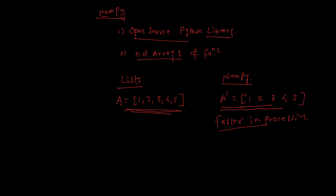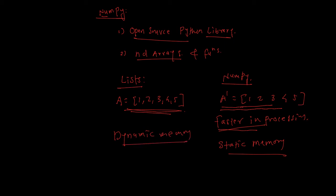The reason why NumPy arrays are faster in processing is that they are stored using what is called static memory allocation, whereas lists are stored using dynamic memory allocation. With static memory allocation, data is stored in contiguous memory locations in RAM. Whereas with lists, data is not stored in contiguous memory locations.